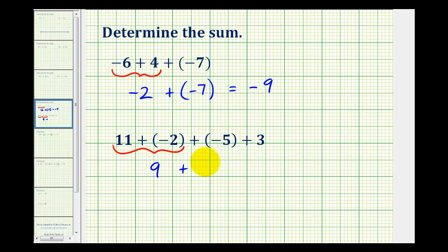So we have positive nine plus negative five plus three. Now we'll determine the sum of positive nine and negative five. Noticing the positive nine is going to outweigh the negative five, so this will be positive four, and then positive four plus three is seven.